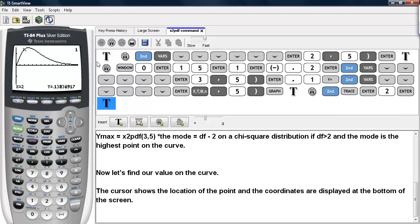And we see that the cursor represents the location of the x-coordinate here and the y-coordinate here. And this is how you can use the chi-square PDF command on the TI-83/84 calculators.